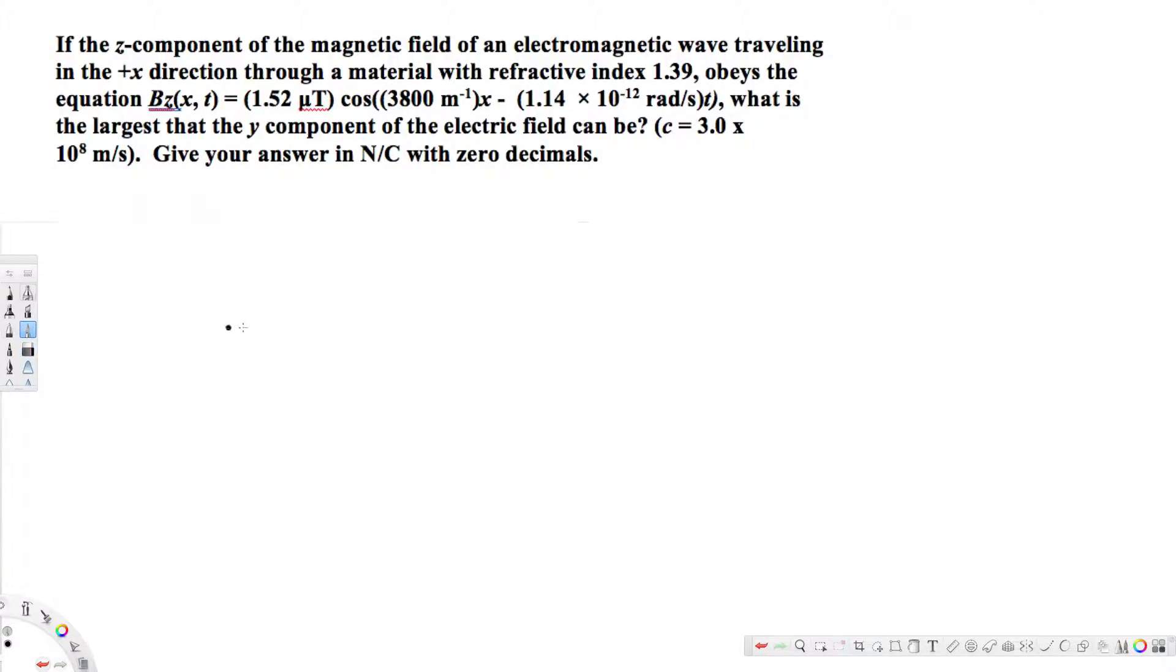What's going on guys, let's look at this problem. The question is asking if the z-component of the magnetic field of an electromagnetic wave traveling in the positive x direction through a material with refractive index of 1.39 obeys the equation Bz equals 1.52 microtesla cosine of 3800 meters inverse x minus 1.14 times 10 to the power of 12 radians per second t, what is the largest that the y-component of the electric field can be?